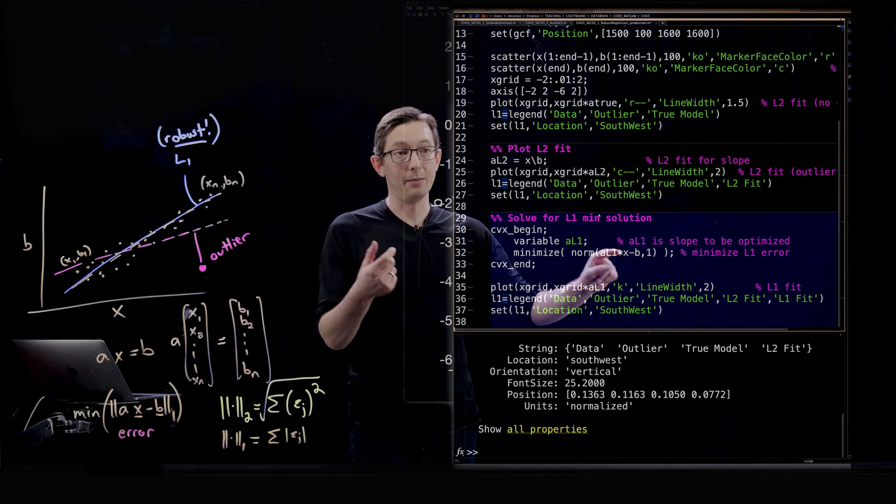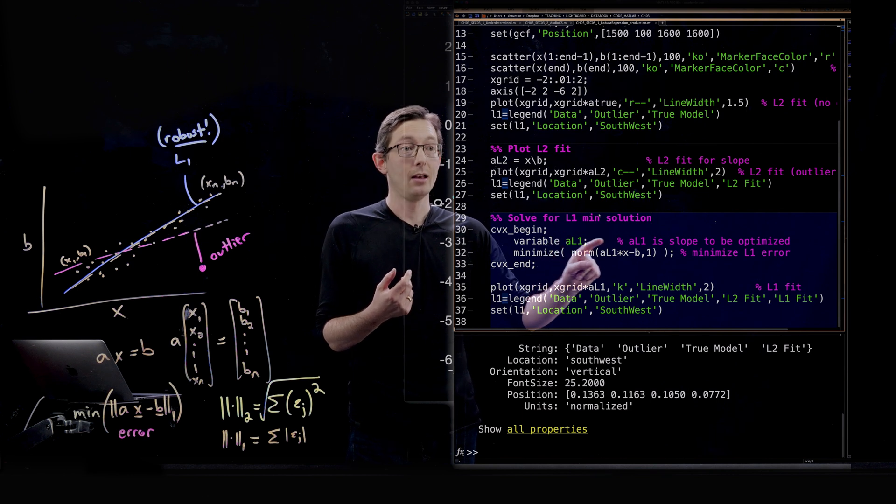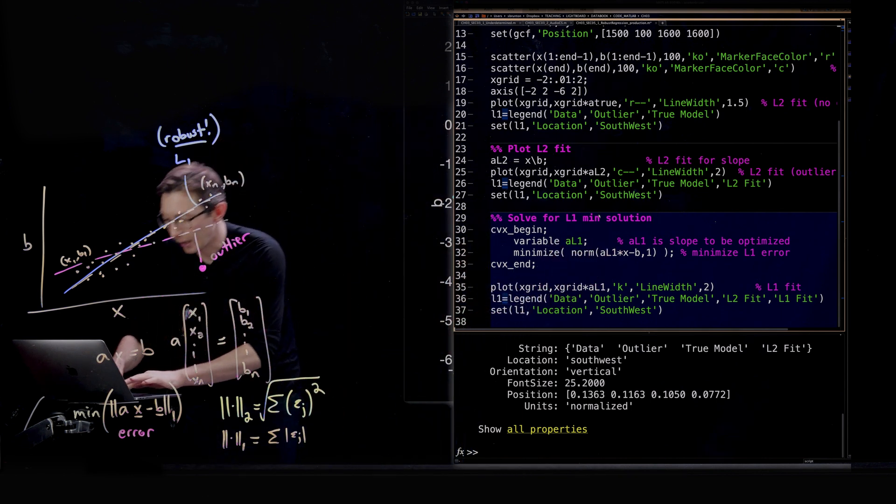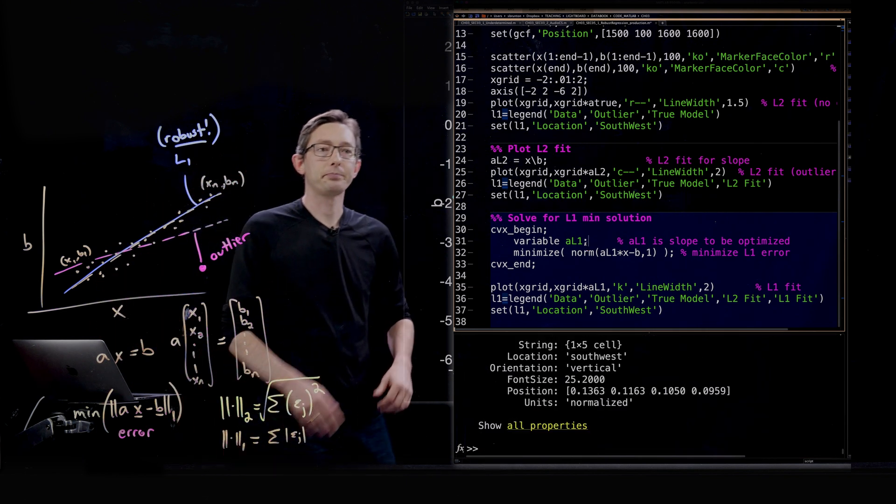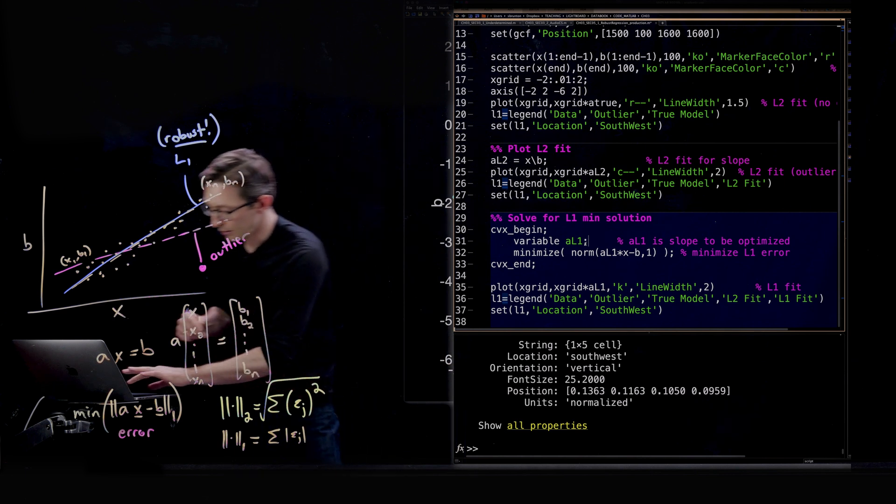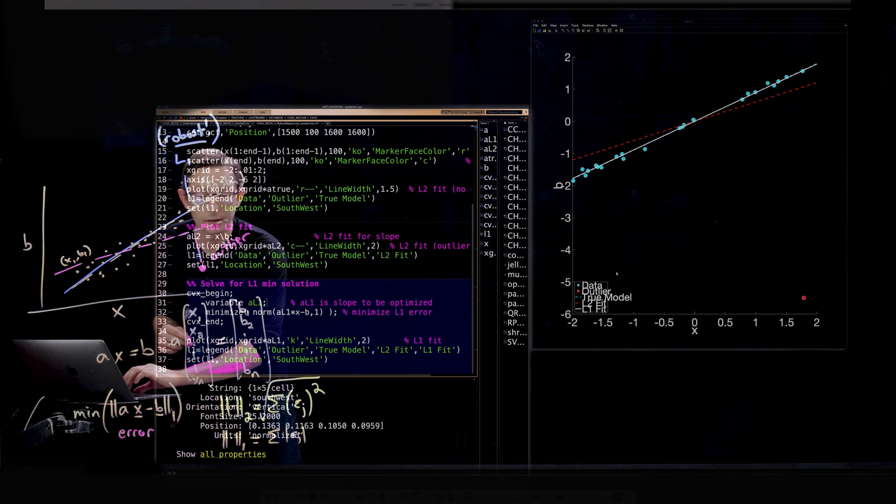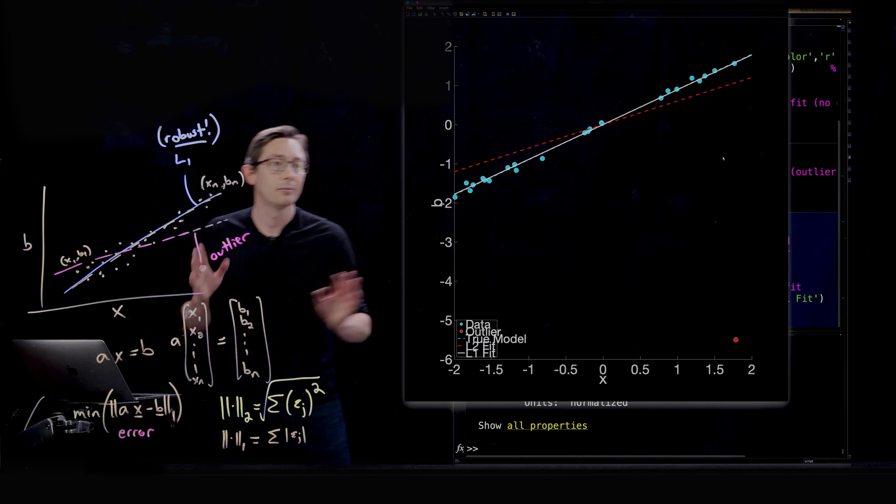We're going to basically minimize over A the one norm of the error. And I'm going to run this, it might take a minute, this always takes a minute to run CVX. That was pretty fast. And I hope it plotted my new fit, perfect.